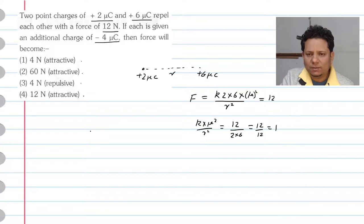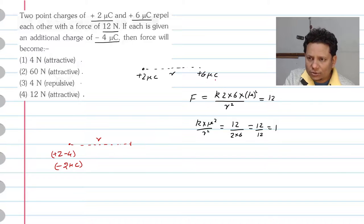Now second case - what have we done? We add minus 4 micro coulomb to each charge. That means your first charge was plus 2 micro coulomb, your second charge was 6. After adding minus 4 to each, the first charge becomes minus 2,